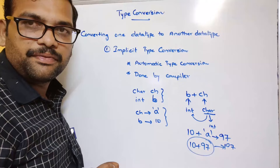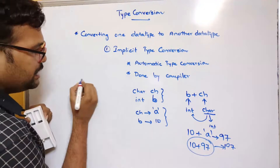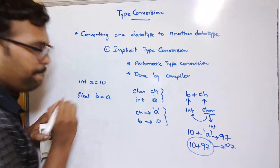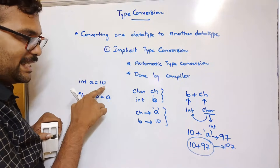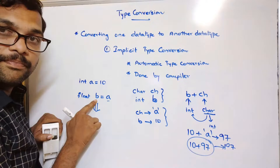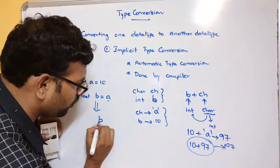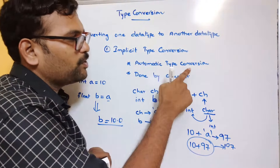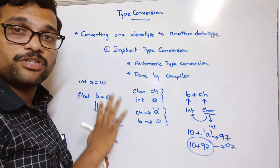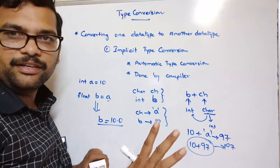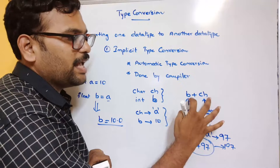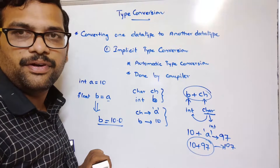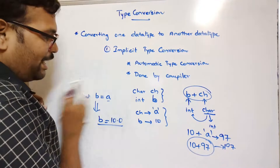One more example: consider int a = 10 and float b = a. The integer value is being assigned to a float variable, so the lower-level data type is converted into the higher data type. Automatically, b will have the value 10.0. This conversion is done by the compiler — this complete process is called automatic type conversion or implicit type conversion. The user does not do anything.